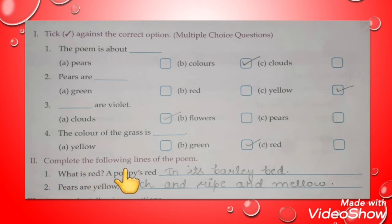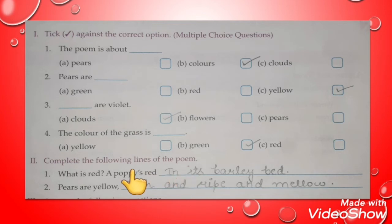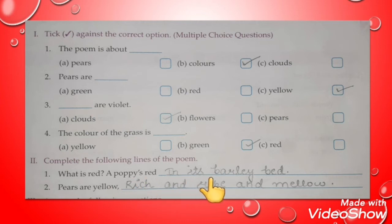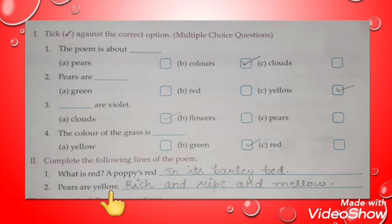Second, complete the following lines in the poem. We have to complete the lines according to the poem. What is red? A poppy is red in its barley bed. Pears are yellow, rich and ripe and mellow.